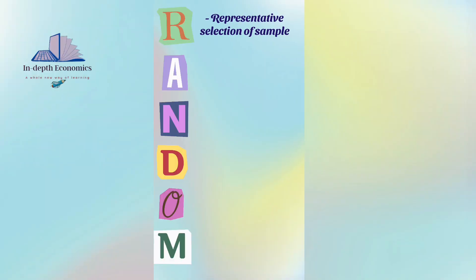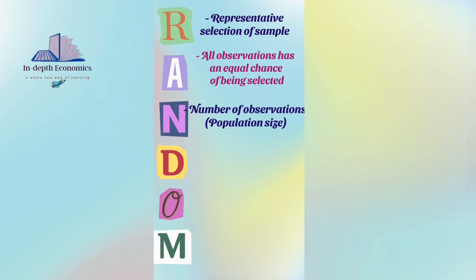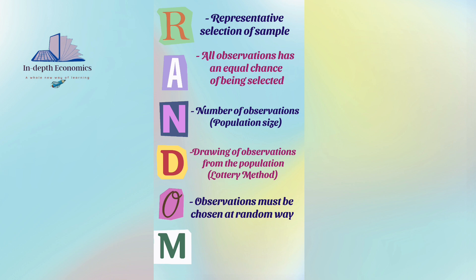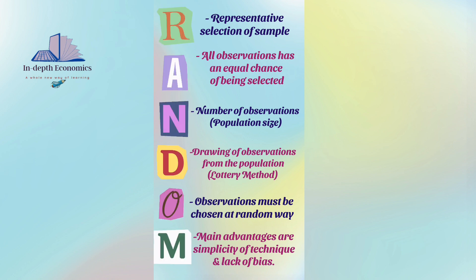Before we list down the key differences between random and non-random sampling, let us do something very interesting. We will use the acronym RANDOM to learn more about random sampling. This method involves random selection of a sample from the population, so all observations have an equal chance of being selected. It requires information about the total number of observations in the population, or population size. By drawing observations from the population, a representative sample is selected. The method is similar to our lottery, so observations must be selected by random draws. Major advantages of this method include its simplicity and lack of bias.